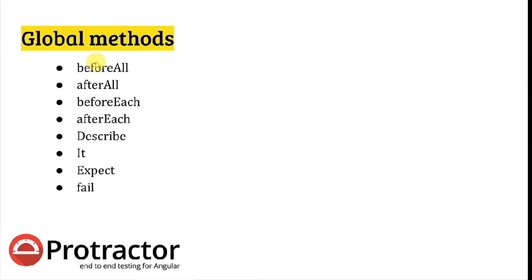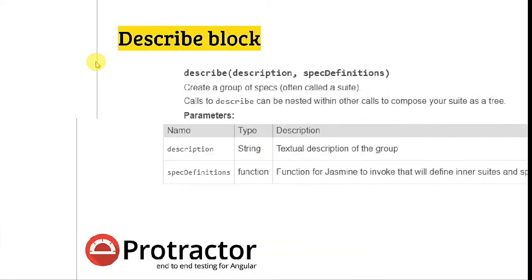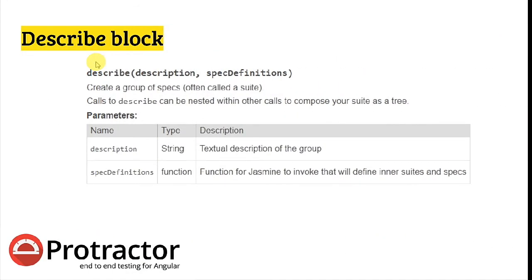The global methods available in the Jasmine framework are: beforeAll, afterAll, beforeEach, afterEach, describe, it, expect, fail, and some others like focused methods. These are the main methods you need to know and understand in order to put a proper structure and framework in your Protractor script. We'll begin with the describe block, as describe and it are the most popular and most-used methods of the Jasmine framework.